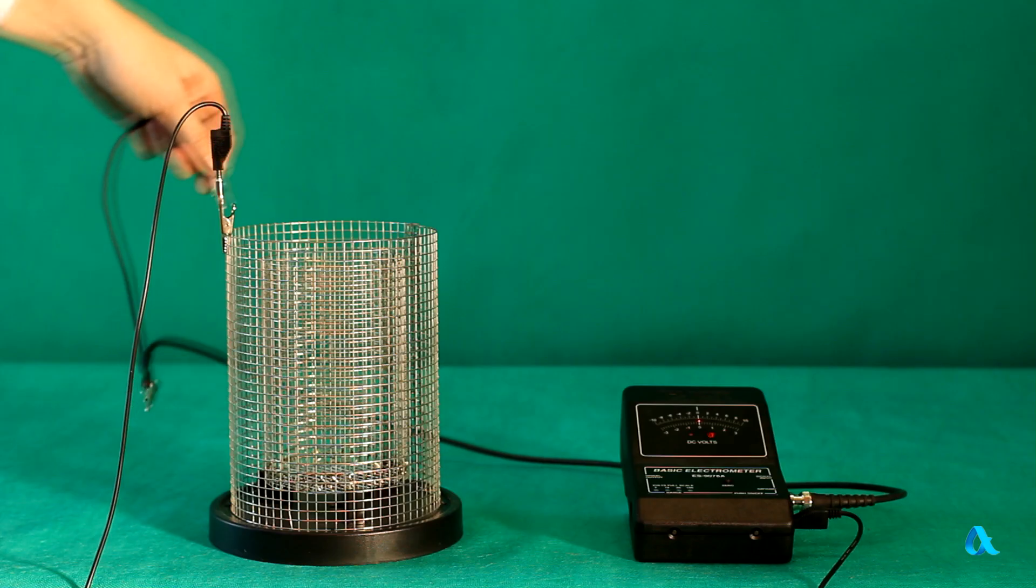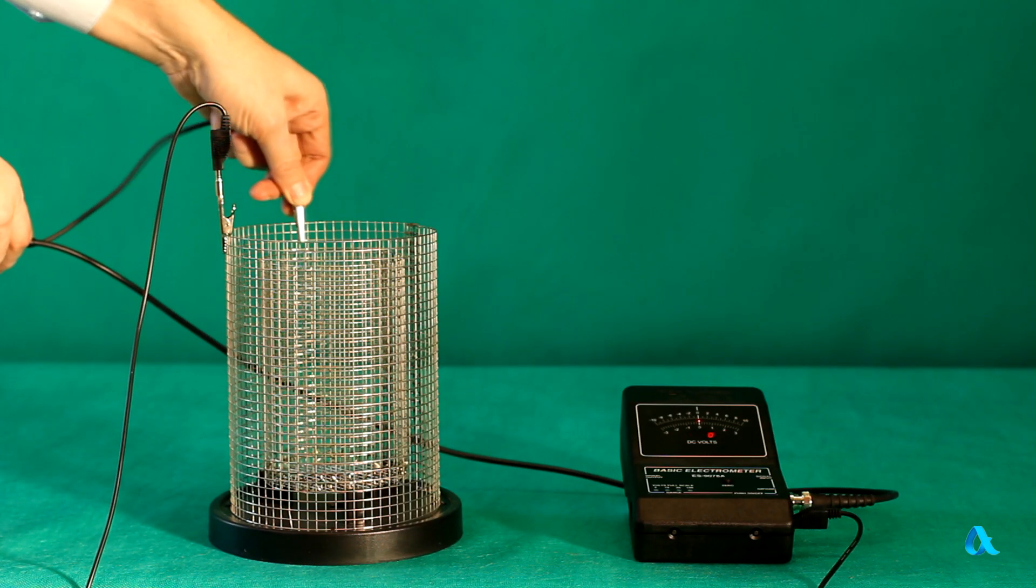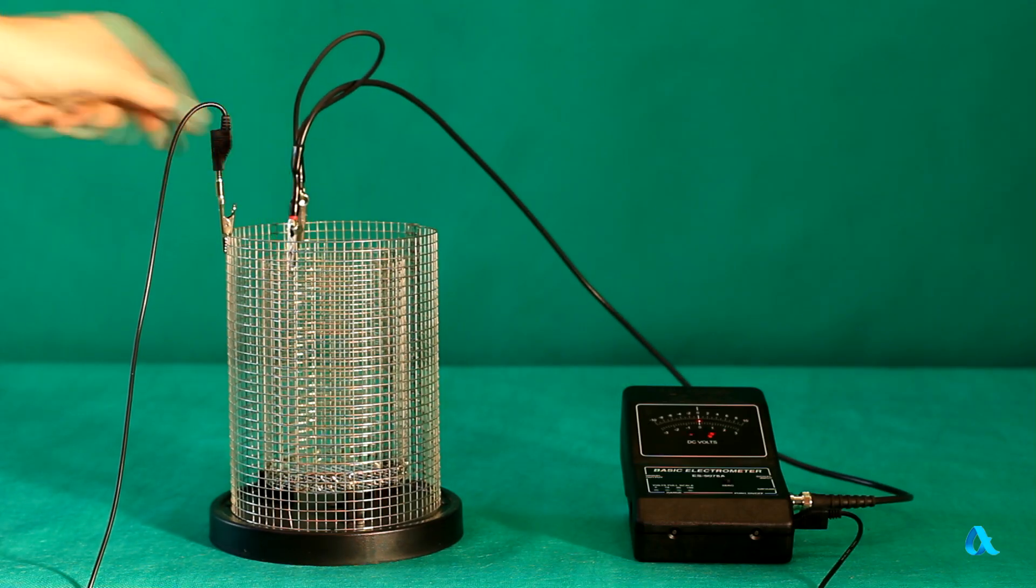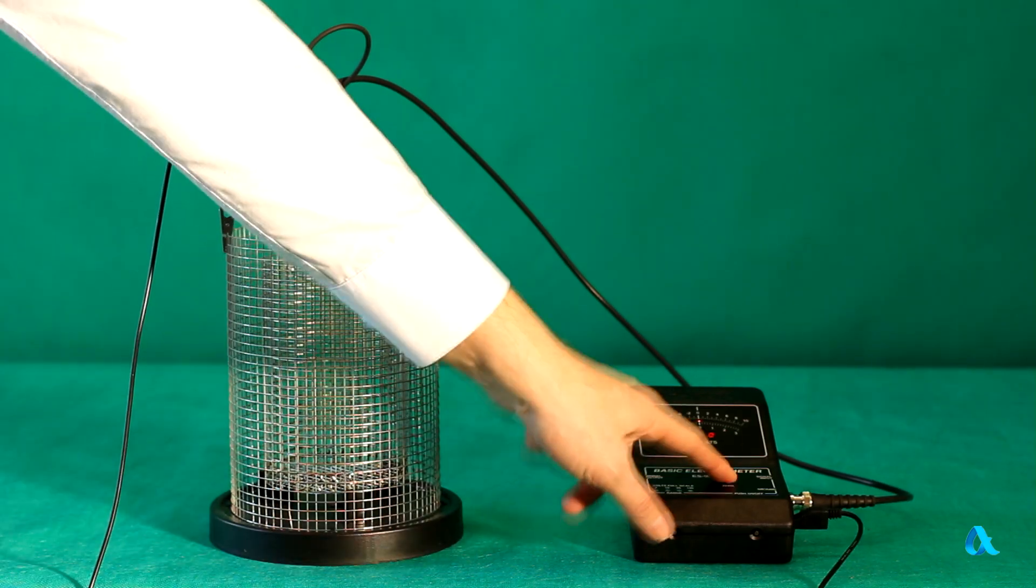We'll use an electrometer to measure the charges, so we connect one of its lead-outs to the outer mesh and the other one to the inner mesh and adjust the electrometer for zero.